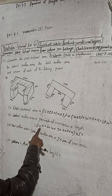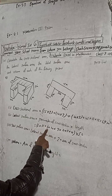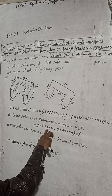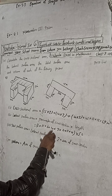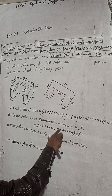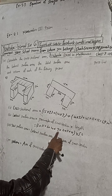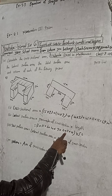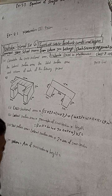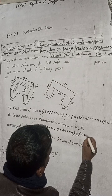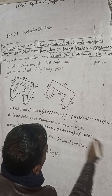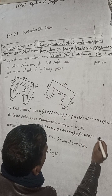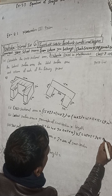Adding the sides: 15 plus 6 is 21, plus 6 is 27, plus 7 is 34, plus 4 is 38, plus 4 is 42, plus 3 is 45... total perimeter is 48. Then lateral surface area equals 48 into 5, which gives 240 square meters.